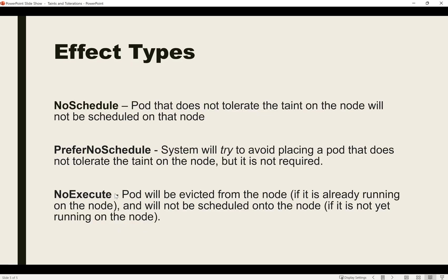There are three effect types defined when creating taints or tolerations. The first is NoSchedule: if there is no matching toleration defined for a pod, that pod can't be scheduled on a tainted node. However, if a pod is already running on the node and the taint is changed, that pod will not be evicted — NoSchedule only applies to new pods being created.